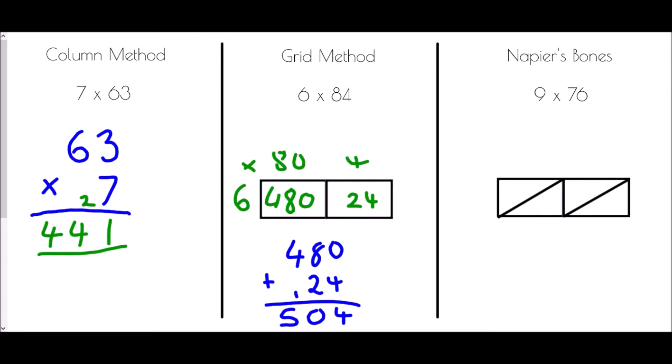Now Napier's bones. This one looks the most complicated to set up but actually makes things quite easy in terms of the actual multiplication. In this case I've used 2 boxes for 76 — I write 7 and 6 across the top, and on the right-hand side I write the number 9. Now I multiply: 7 times 9 is 63, so I write the tens digit (6) in the first block and the units digit (3) in the second block. Then 6 times 9 is 54, so 5 goes in the first block and 4 in the second block.